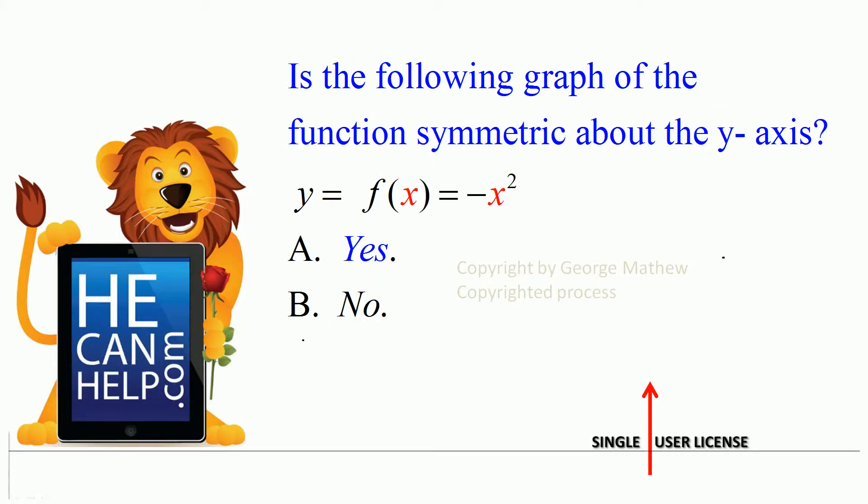Is the following graph of the function symmetric about the y-axis? y equals f of x equals negative x squared. The relationship between x and y is given by y equals negative of x to the power of 2.